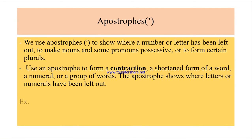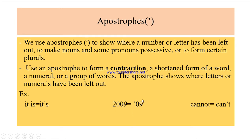Use an apostrophe to form a contraction — a short form of a word or a numeral. If you have a number like 2009, you can shorten it. Also, 'cannot' becomes 'can't.' The apostrophe shows where letters or numerals have been left out — here instead of 20, and here instead of the letter O.